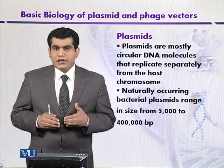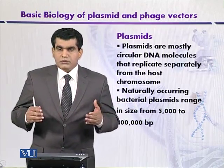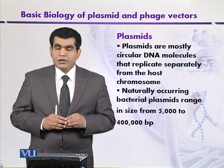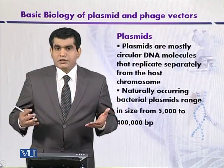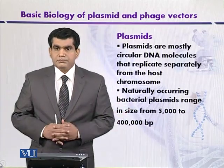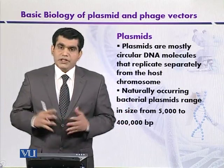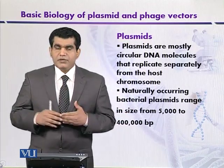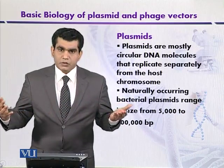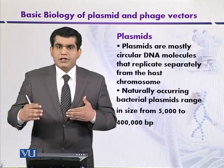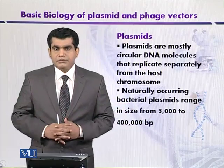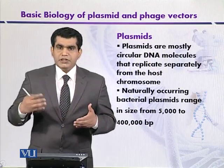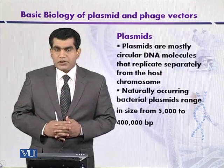When cloning larger fragments from eukaryotic sources, it is not possible to use plasmids, cosmids, or lambda phage vectors. Under such situations, scientists have developed other artificial vectors like bacterial artificial chromosomes (BACs) that can deliver larger DNA fragments. To clone even larger DNA fragments in yeast, yeast artificial chromosomes (YACs) have also been developed.